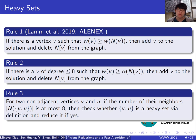Rule 2 considers low degree heavy vertices. In small graphs, it's easy to find the best solution by enumeration. So, we can check these vertices according to the definition directly.